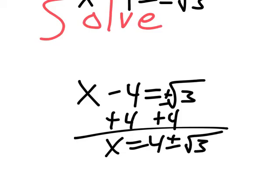That will give you your two solutions. x is 4 plus square root of 3, but x is also 4 minus square root of 3. Those are the two answers.